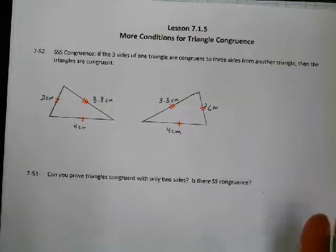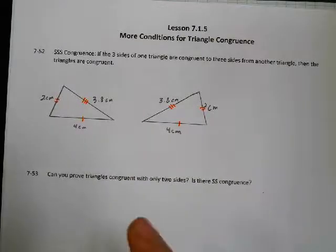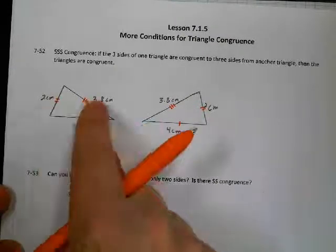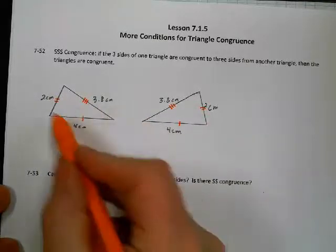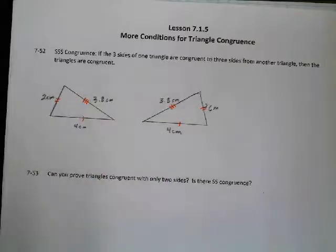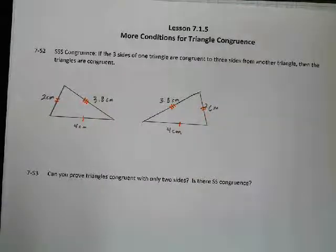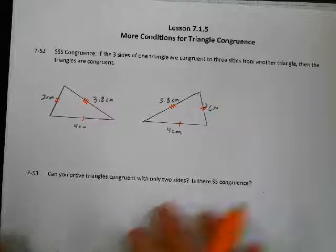Notice we don't know anything about the angles. But no matter how we rearrange these sides — 1, 2, 3 or 1, 3, 2 or 2, 3, 1 — it's all still going to be the same pattern of sides. So the angles are also going to be in the same pattern. It's possible to not know anything about the angles but still prove the triangles are congruent. If we can prove all the sides are congruent, that's enough to prove all the angles are congruent as well. So this is one of our shortcuts.